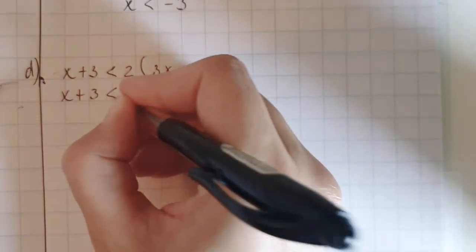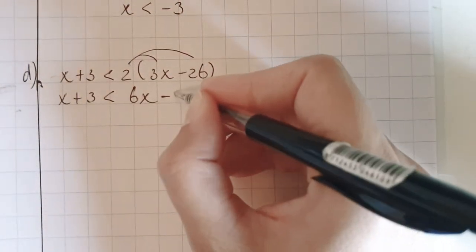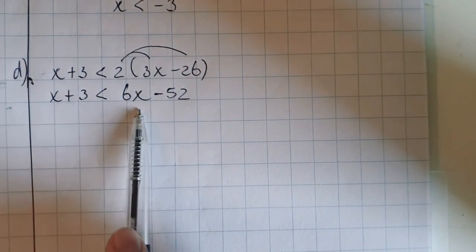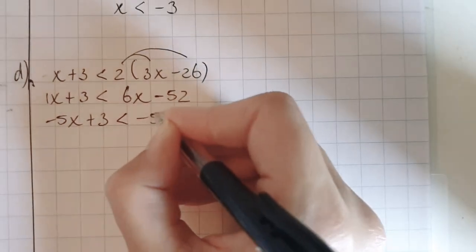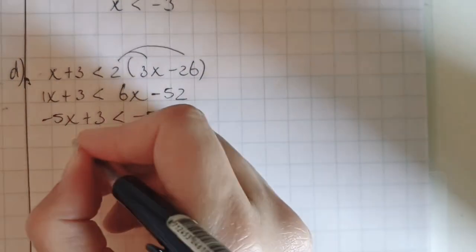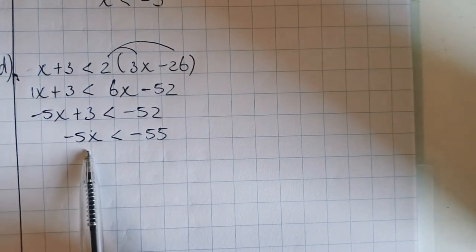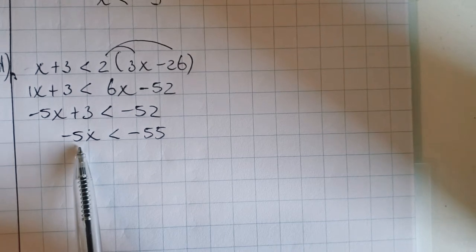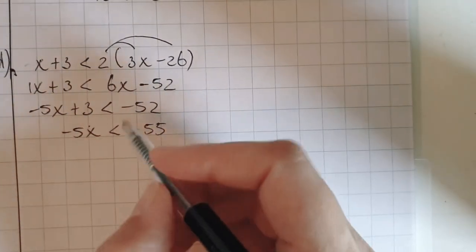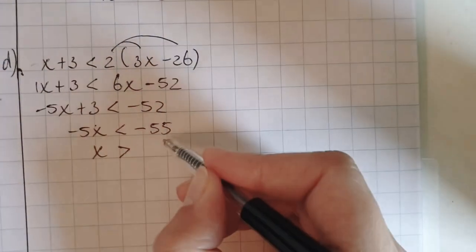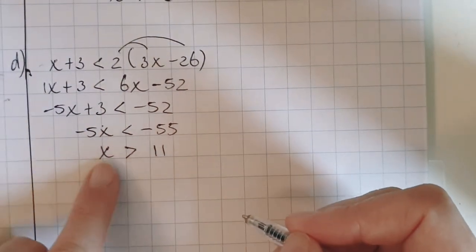Also brackets — copy everything and then remove the brackets. 2 times 3x is 6x, and 2 times minus 26 is minus 52. And then minus 6x here, minus 6x there — this is a 1, and 1 minus 6 is minus 5x. And then minus 3 on this side, minus 3 on that side — this is minus 55. Now you have to divide by a negative number in front of the x, so divide by minus 5 on both sides. When you divide with inequalities, the symbol changes the other way around. Minus divided by minus is positive — 55 divided by 5 is 11. So x is greater than 11.